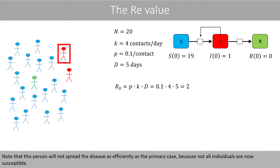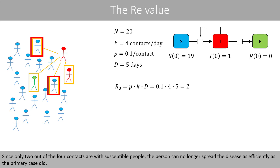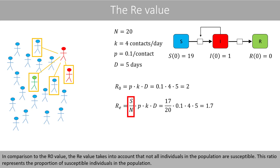Note that this person will not spread the disease as efficiently as the primary case, because not all individuals are now susceptible. Suppose that this infected person has a close contact with these four individuals — since only two out of the four contacts are with susceptible people, the person can no longer spread the disease as efficiently. To estimate how many individuals an infected person spreads the disease to on average when not all individuals are susceptible, we can calculate the Re value, also known as the Rt value, which is the effective reproduction number. In comparison to the R0 value, the Re value takes into account that not all individuals in the population are susceptible.